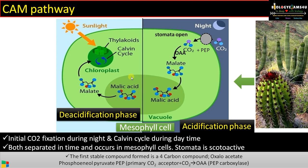During daytime, in order to avoid water loss by transpiration, the plant closes its stomata. The malic acid stored in the vacuole is taken out and decarboxylated to release carbon dioxide. This carbon dioxide runs the Calvin cycle — it enters the chloroplast, and the malate is decarboxylated to pyruvate, which is recycled back.